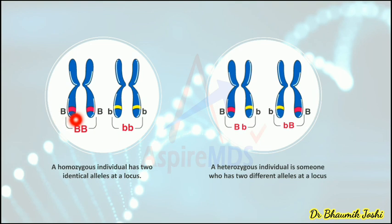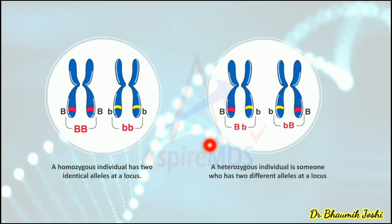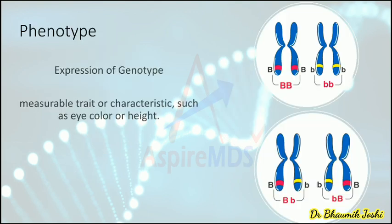If both alleles at a locus are the same — for example both capital B or both small b — we call the individual homozygous for that gene. If the two alleles at the same locus are different, we call the person heterozygous. Phenotype is how the genotype is expressed — what we can see. It is a measurable trait or characteristic such as eye color or height. Phenotype is the expression of the genotype, but the genotype cannot be seen with the naked eye.